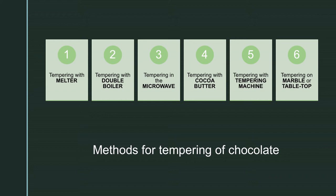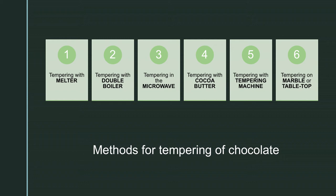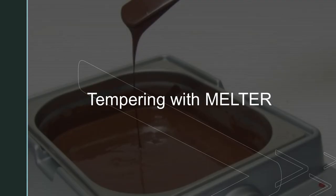Tempering chocolate is the process of pre-crystallization of cocoa butter to make the chocolate suitable for processing. This assures a perfect finished product with a hard snap and glossy finish. Being a chocolatier, you should follow one of these six methods of tempering chocolate: tempering with a melter, tempering with a double boiler, tempering in the microwave, tempering with cocoa butter, tempering with a tempering machine, and tempering on marble or tabletop.